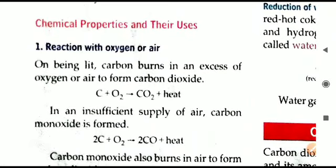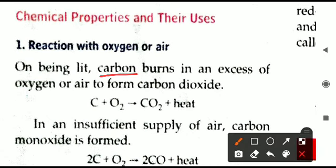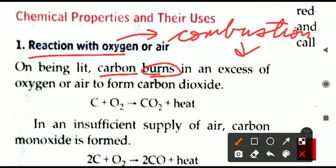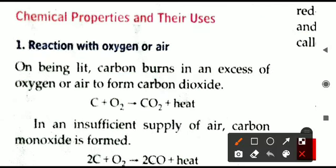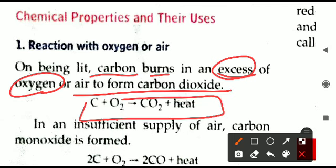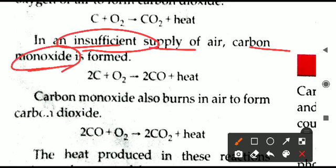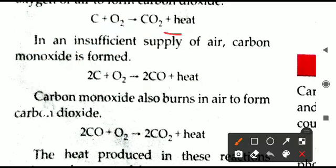Now we move to the chemical properties of carbon. The first is the reaction with air, which relates to combustion — meaning burning. Carbon burns in excess air or oxygen to form carbon dioxide: C + O₂ → CO₂ + large amount of heat and light. If there is insufficient supply of oxygen, carbon monoxide (CO) is produced instead of CO₂. Both reactions produce heat.